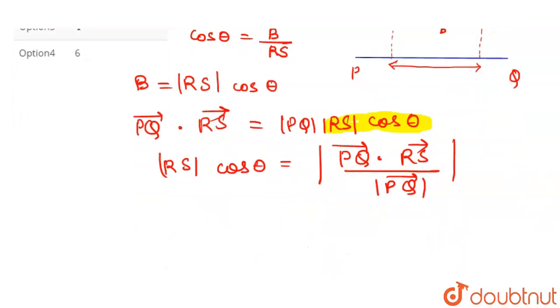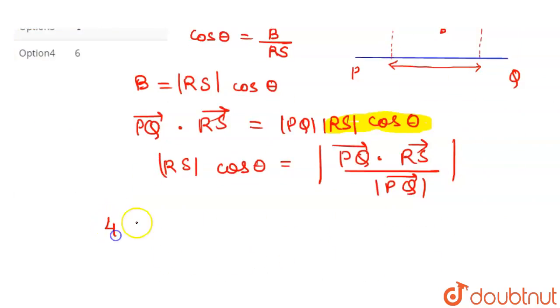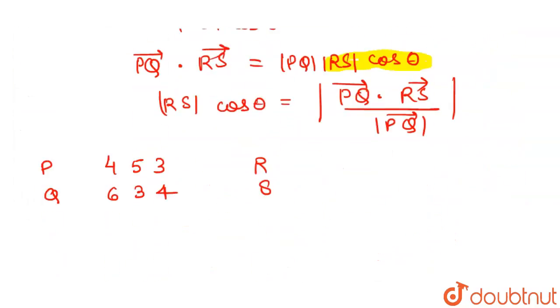Here we can see that the PQ points are: P is (4, 5, 3), Q is (6, 3, 4). RS: R is (2, 4, -1), and S is (0, 5, 1). So these are the points.